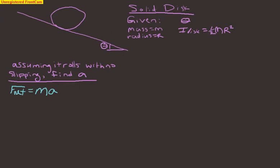We should add some things to our diagram. Let's add a direction coordinate system. Let's say that down the ramp is positive and up is negative, since this is the direction it's going to accelerate and that's what we're solving for. If it accelerates down the ramp, it's going to roll clockwise, so let's make that direction of angular acceleration positive, because a positive angular acceleration leads to a positive linear acceleration. The opposite direction will be negative.